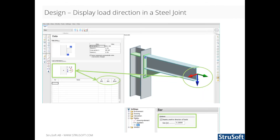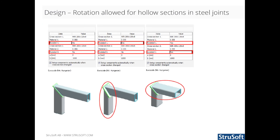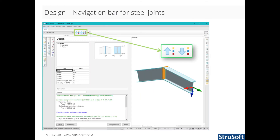It is now possible to display the load direction of a steel joint. The option can be switched on and off in settings in the display tab for bars. Hollow sections can now be rotated separately in all joints for which hollow sections are available. It is now possible to use the navigation buttons to switch between different joint designs.